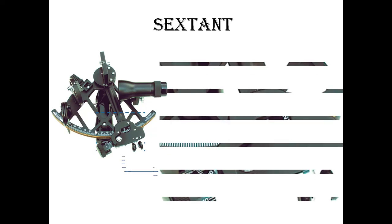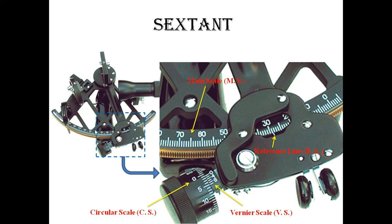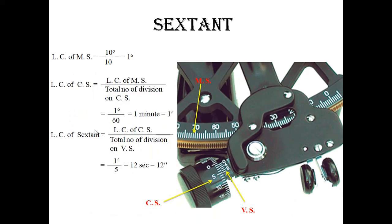Here I am showing another type of sextant instrument. You can see there are three types of scales. You can see a better picture in the zoomed part: the main scale, the circular scale, and the vernier scale. This reference line helps to read the reading on the main scale.